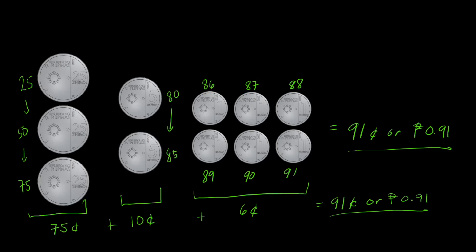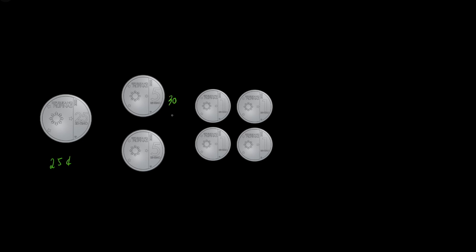Let's try another example. For this one, we will count by skip counting first. So 25 centavos — from 25 centavos we have 30, then 35 centavos, and then 36, 37, 38, 39. So we know that this is 39 centavos.